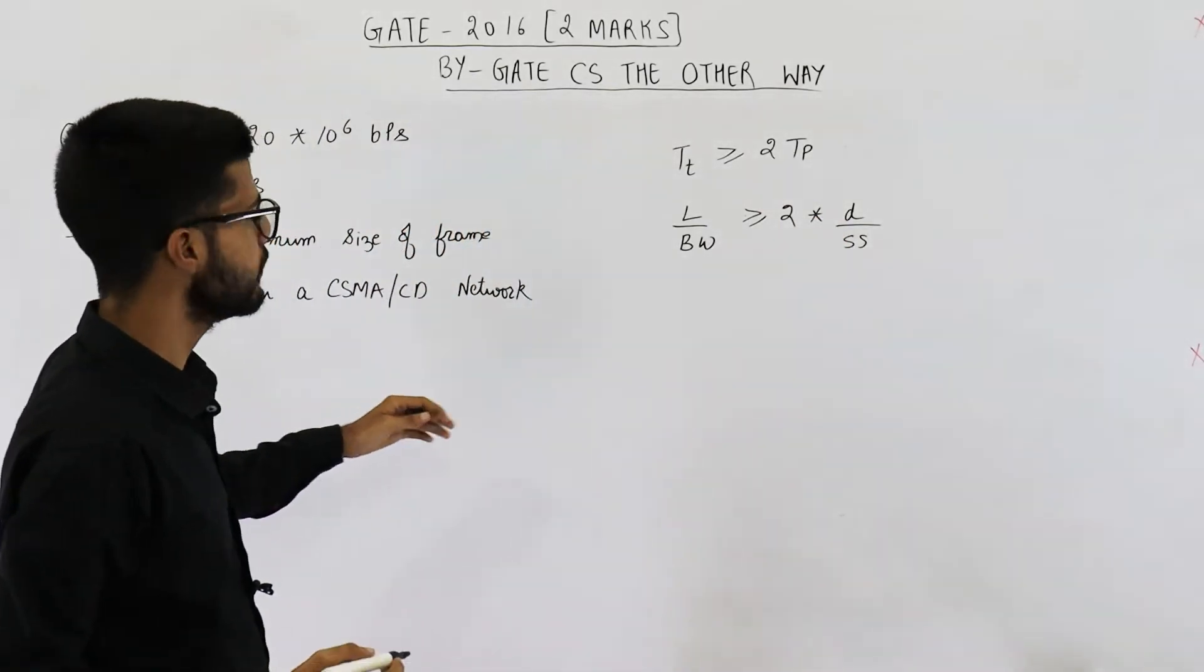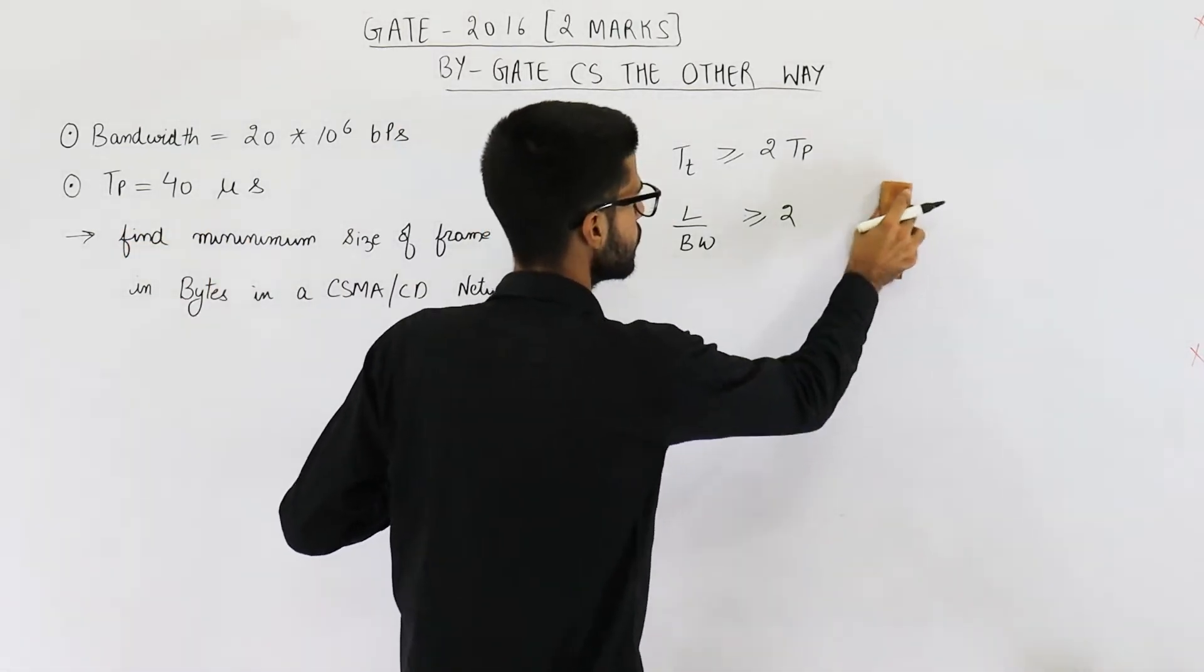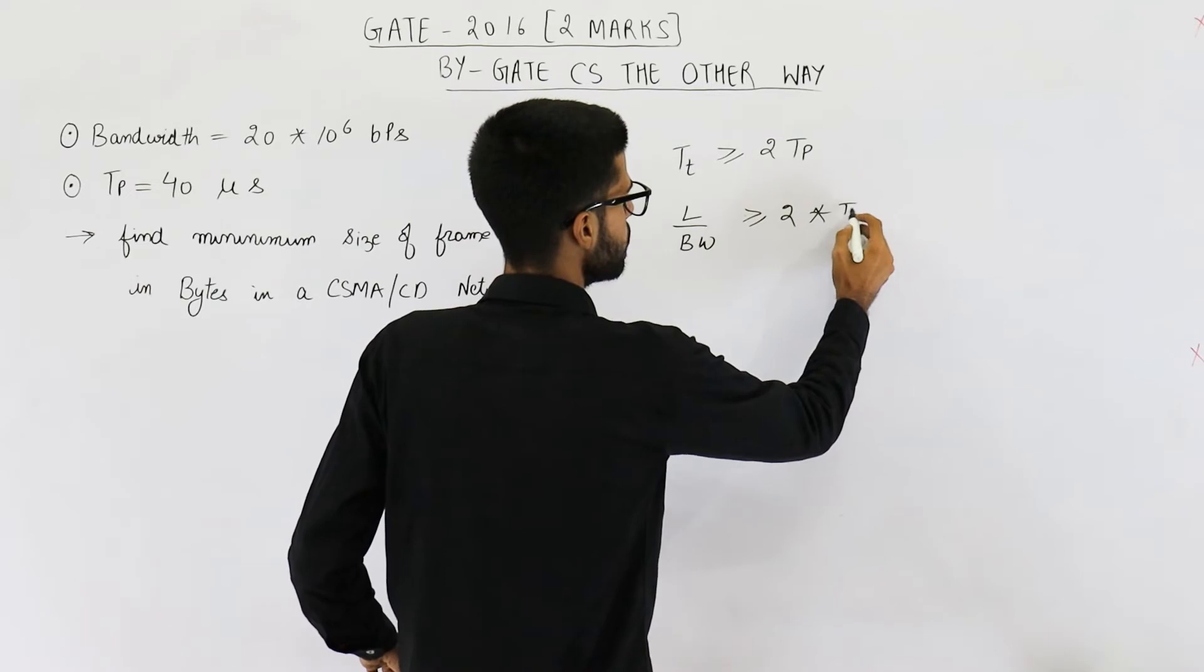Anyways, we don't need this formula. They have directly given the value of TP. So 2 into TP.